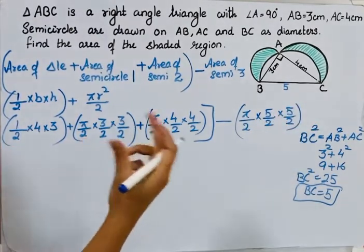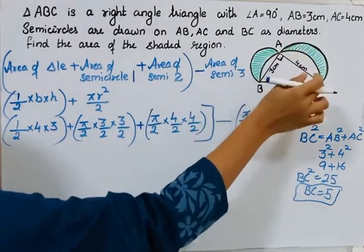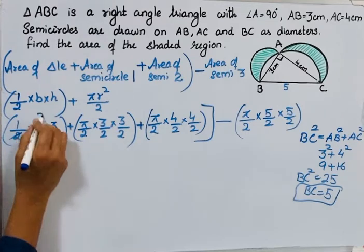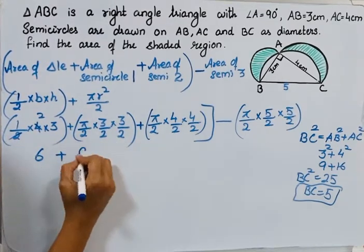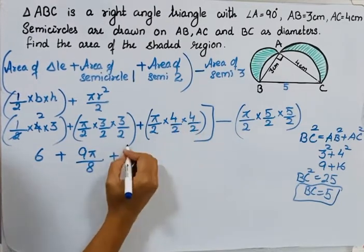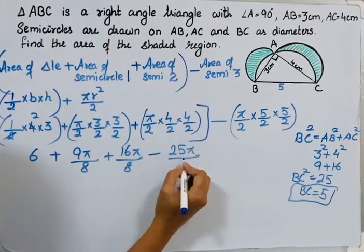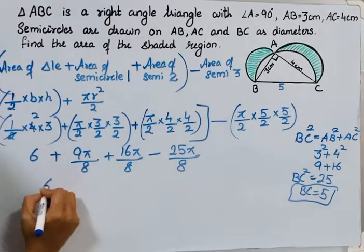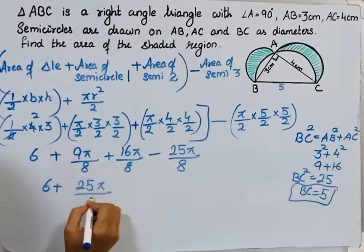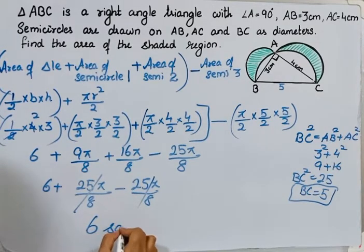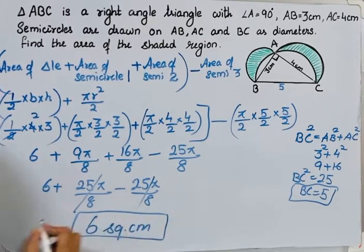So, from the triangle and the two semicircles, we subtract the third semicircle. The calculation gives: 6 + 9π/8 + 16π/8 − 25π/8. Now, 9π and 16π sum to 25π, so the +25π/8 and −25π/8 cancel out. We are left with 6, so the area of the shaded part is 6 square centimetres.